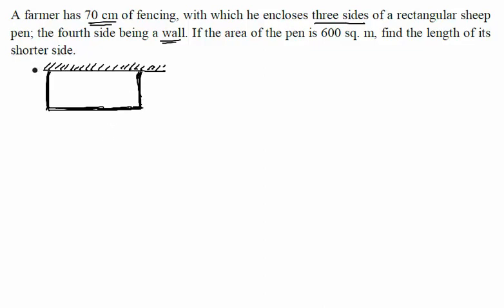Now let us go ahead with the question. We already know that this length of the fencing is 70 centimeters. If the area of the pen is 600 square meters, find the length of the shorter side.